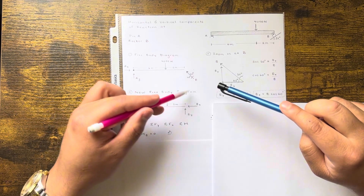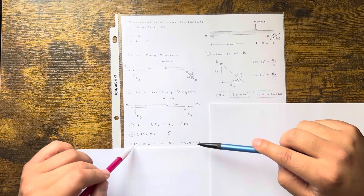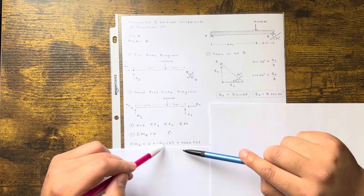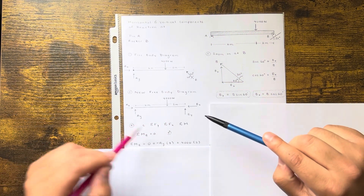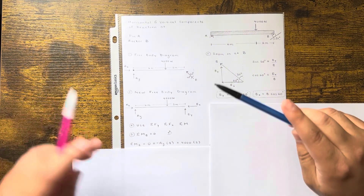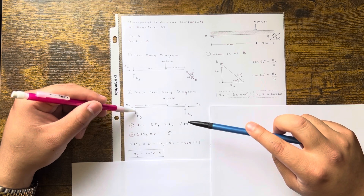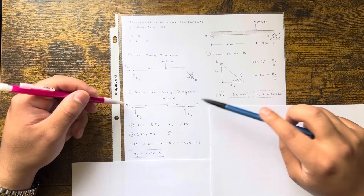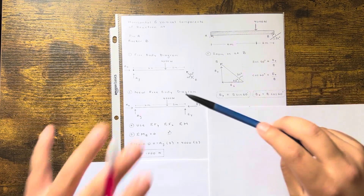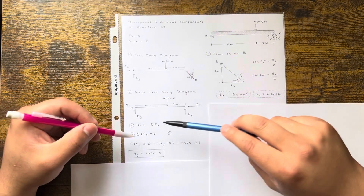Taking the moment about B: Ay produces a clockwise moment and 4,000 produces a counterclockwise moment. Sum of moments about B equals zero. Counterclockwise is positive, so: −Ay × 8 + 4,000 × 2 = 0. Solving gives Ay = 1,000 N. The positive result means the direction was assumed correctly. Even if you assume a direction wrong you'll just get a negative number — just stay consistent throughout the problem.